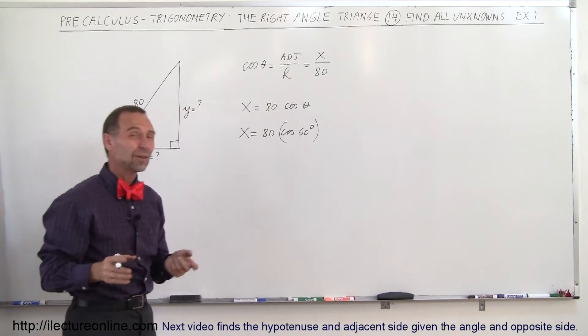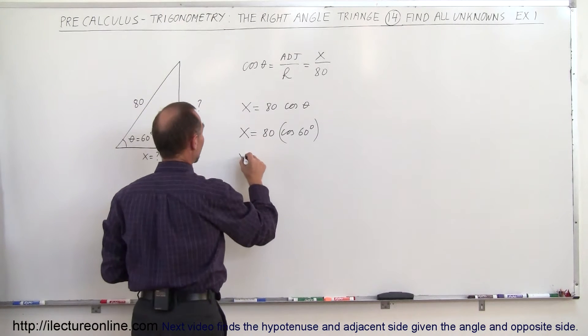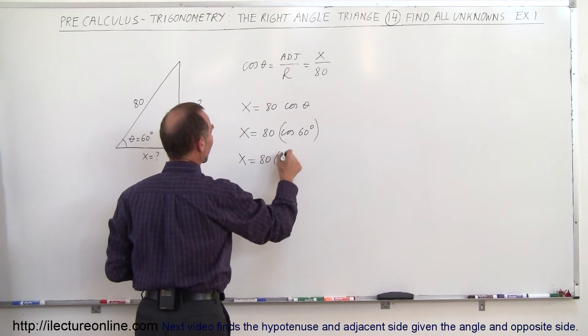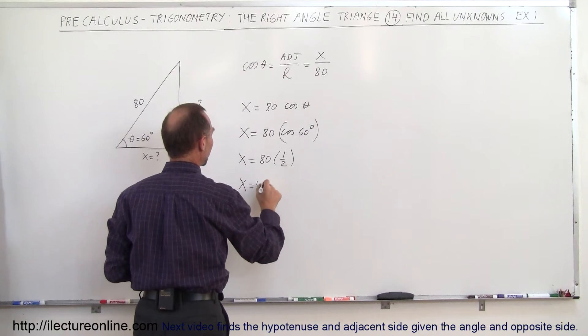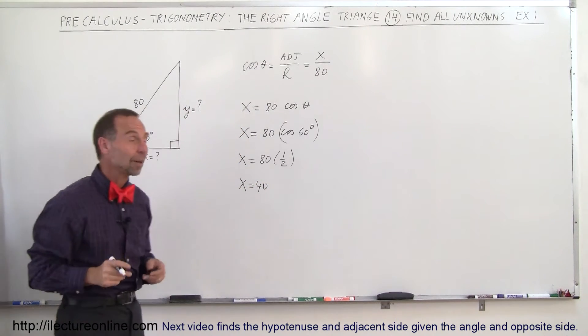Of course, the cosine of 60 degrees is 1 half, so x is equal to 80 times 1 half, or we can say that x is equal to 40. All right, so half the problem done.